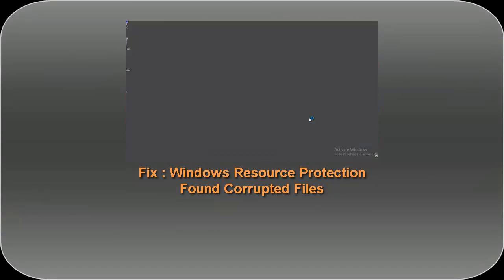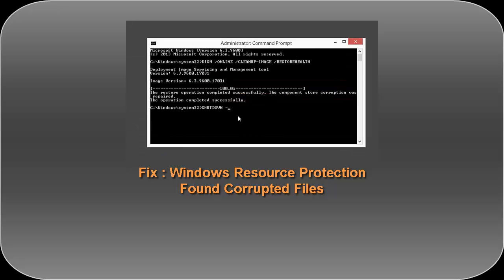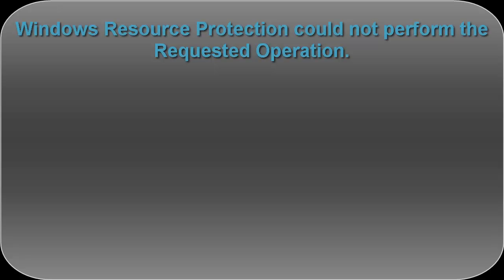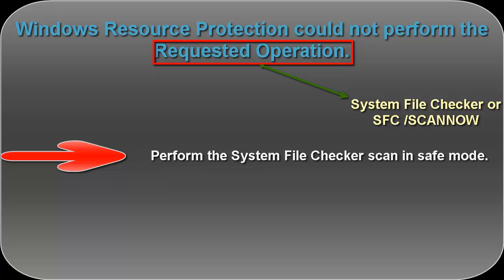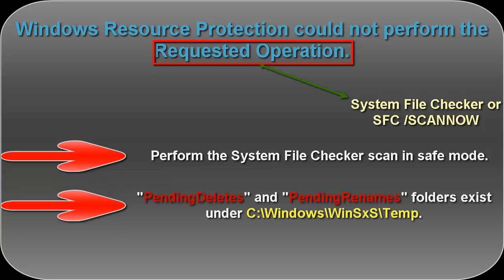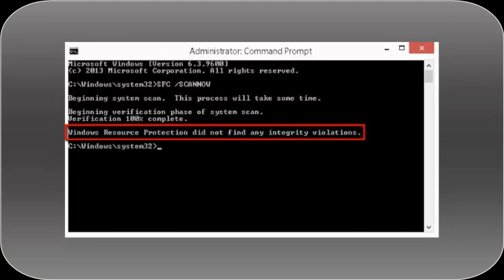We have already addressed that issue with a solution in a separate video — you can click on it and go through it for the resolution. The last message you can get is: "Windows Resource Protection could not perform the requested operation," referring to the SFC scan. To resolve this, perform the SFC scan in safe mode, making sure that the PendingDeletes and PendingRenames folders exist under the path C:\Windows\WinSxS\Temp. Since our SFC scan completed successfully, we don't need to worry about those three previous messages.